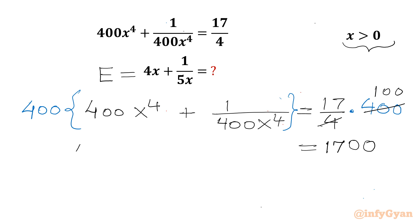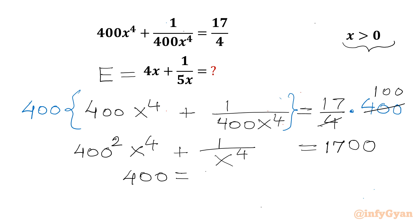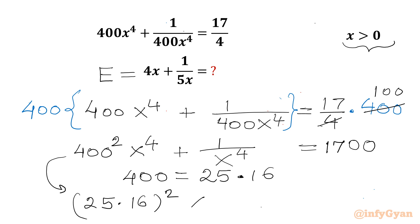The left hand side is 400² times x⁴ plus 1 over x⁴. Now we can factorize 400 as 25 times 16. So I will write 25 times 16 whole square, giving us (25×16)² x⁴ plus 1 over x⁴ equals 1700.